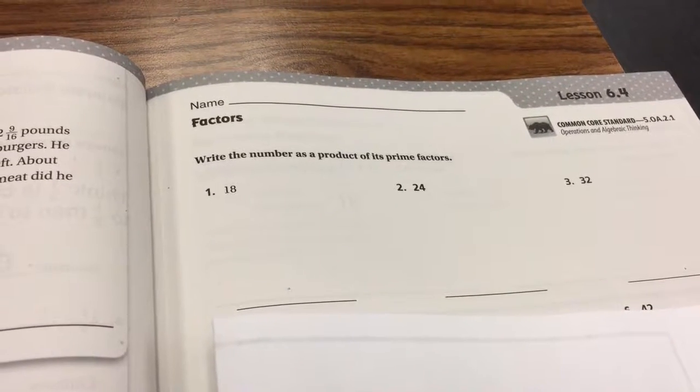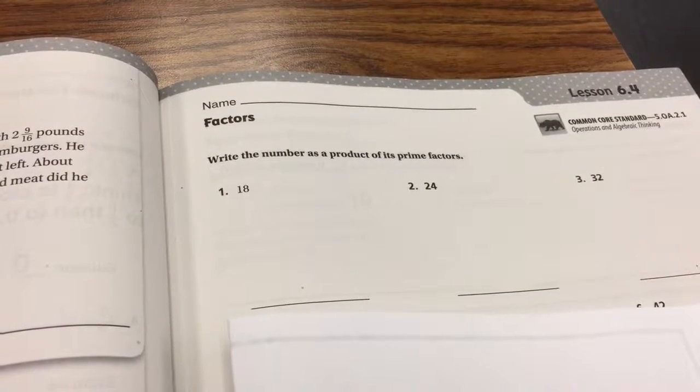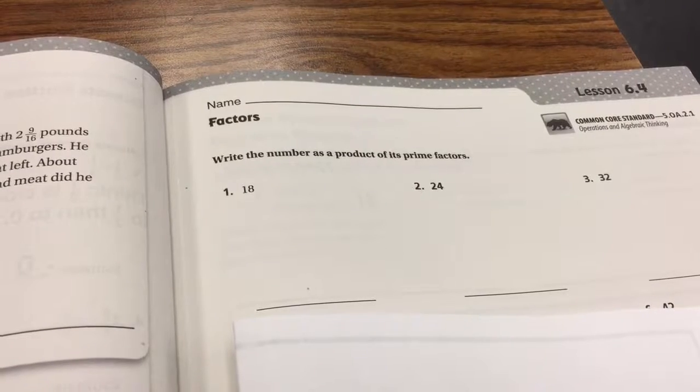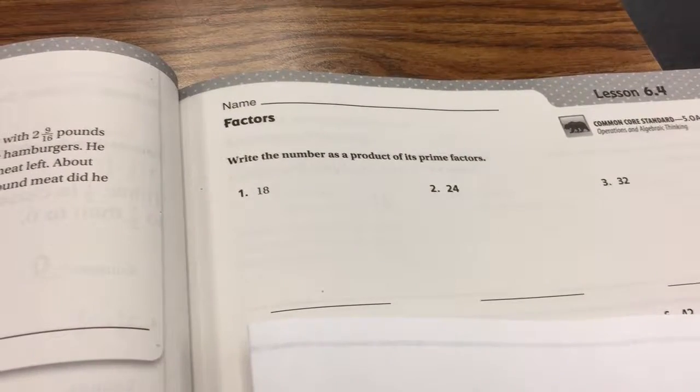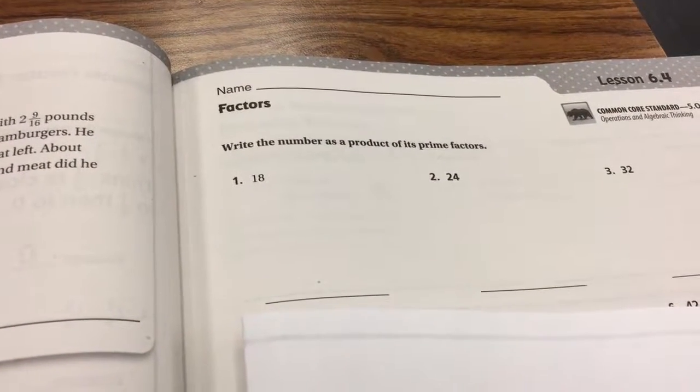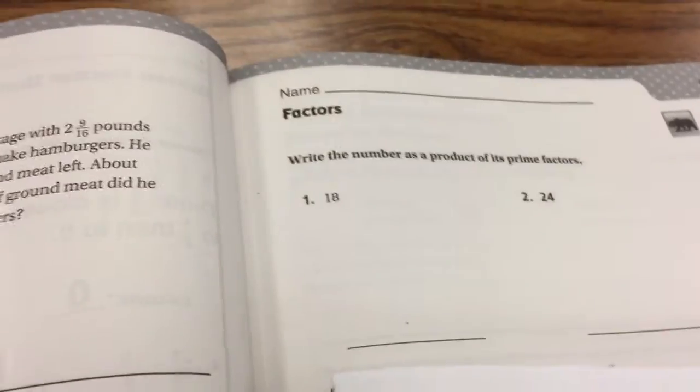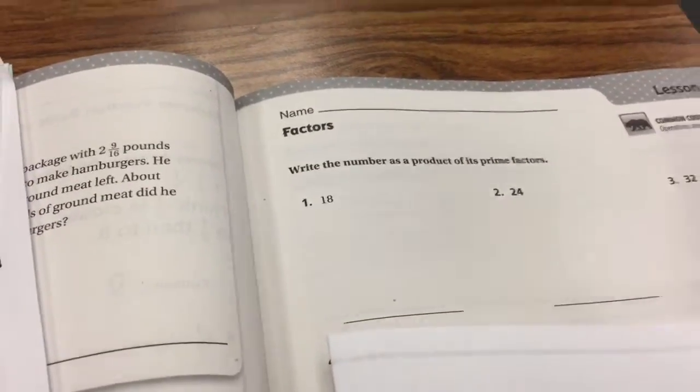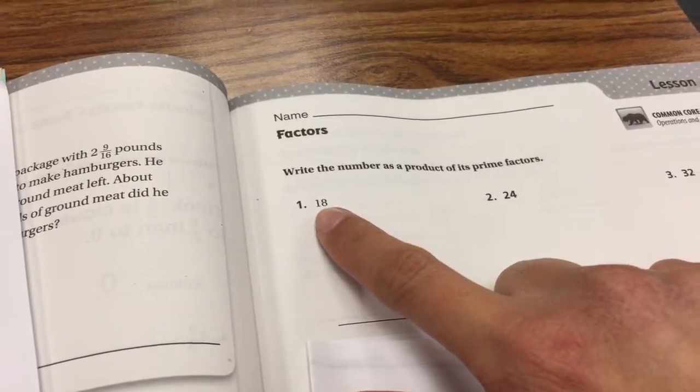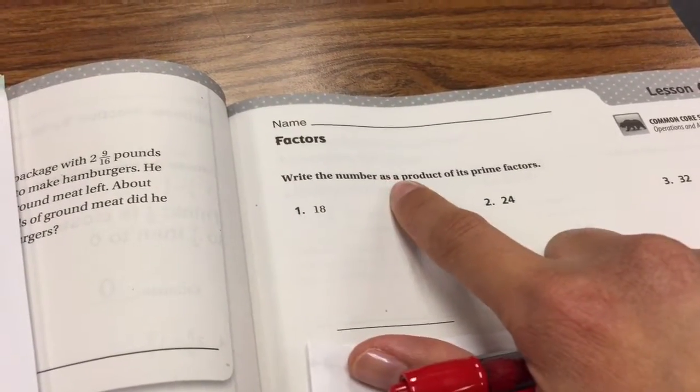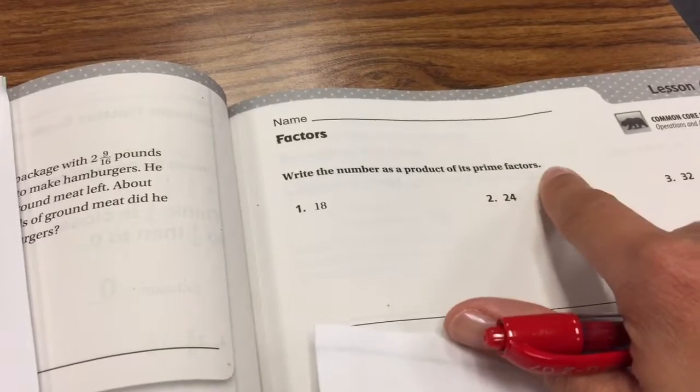Now we're on Chapter 6, Lesson 4. The directions state: write the number as a product of its prime factors. Here I want to go through a little bit of vocabulary before actually doing the lesson. That way you can see what they're asking us to do. So write the number, and for number 1 they're saying 18.